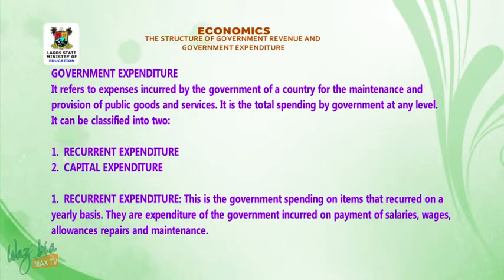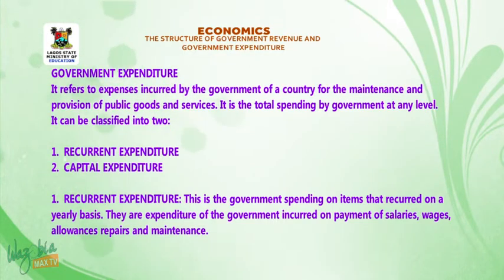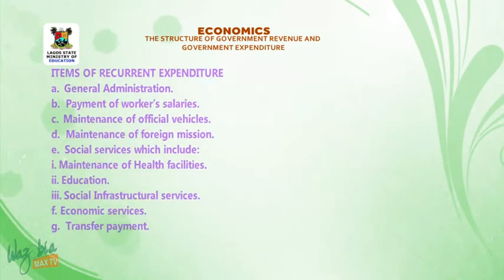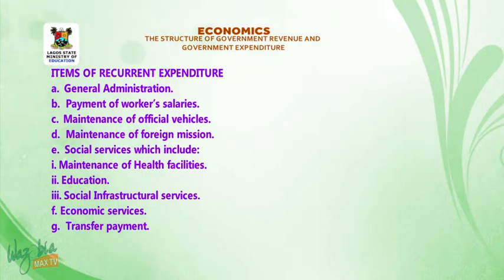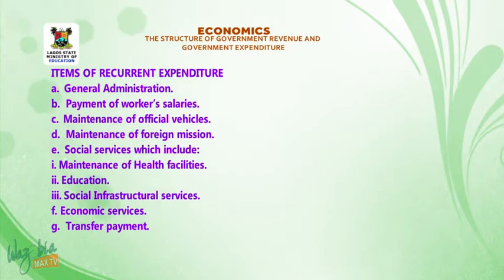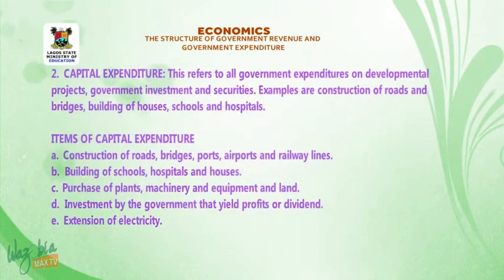Recurrent expenditure is the government spending on items that recur on a yearly basis — expenditure incurred on payment of salaries, wages, allowances, and repairs and maintenance. Items of recurrent expenditure are: 1. General administration, 2. Payment of worker salaries, 3. Maintenance of official vehicles, 4. Maintenance of foreign missions, 5. Social services including maintenance of health facilities and education, 6. Social infrastructural services, 7. Economic services, 8. Transfer payments.